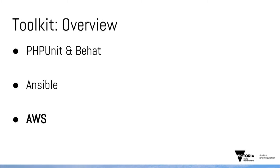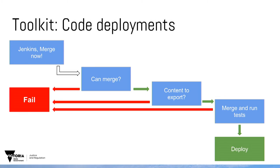Now I'll briefly explain how all this fits together. How do we do a code deployment? We say, hey Jenkins, would you mind merging these two branches together? He goes off and does some tests — can I merge those branches? If there are conflicts or problems, it fails. He then checks: is there any content to export? We've got a JSON callback that checks with the site if any content has been updated or created since the last export. If all is good, we spin up an entire separate machine next to our authoring website, merge the code, run all our tests, and if everything's good, merge and deploy to our actual authoring site.